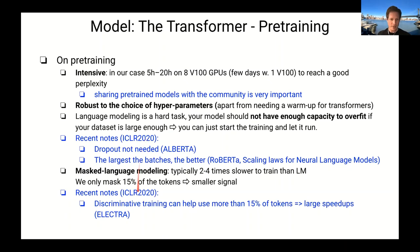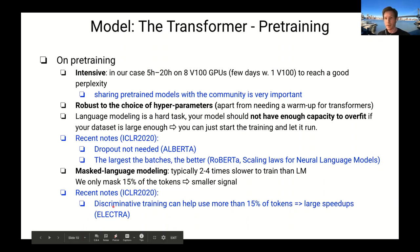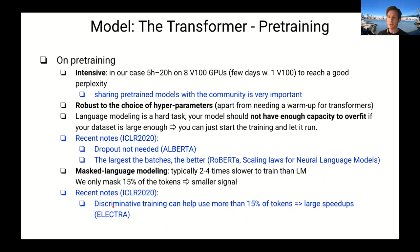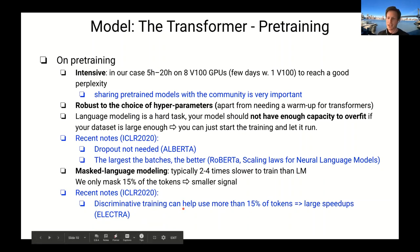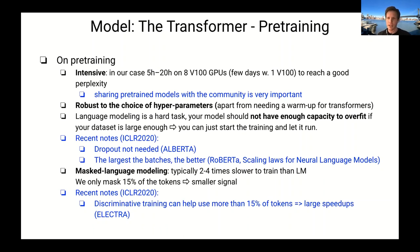There are interesting results from ICLR this year: given that it's hard to overfit, you usually don't need to heavily regularize your model, and larger batch sizes are better. Electra is a model that was open-sourced this week by Google, done by Kevin Clark. It's very interesting because it's a lot more compute-efficient. We are currently integrating it into HuggingFace.